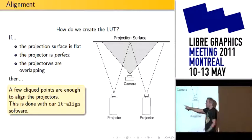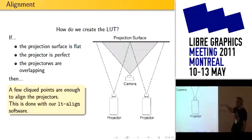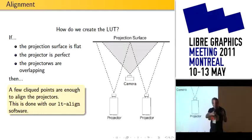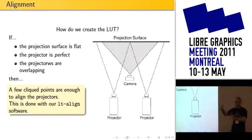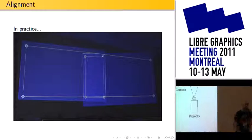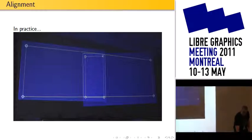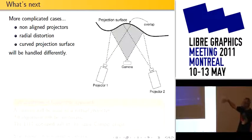Our contribution here is the plug-in first, and second, there's a little side program called LT-align that handles alignment for you. You just click on a few points and it should work. In practice, it looks like two overlapping projectors where you click on a couple of points, and that's all you need to get the distortion working.